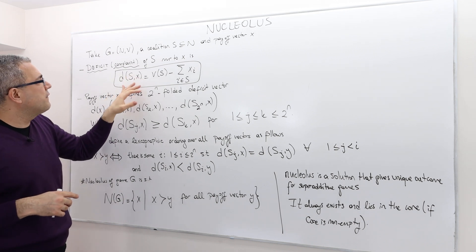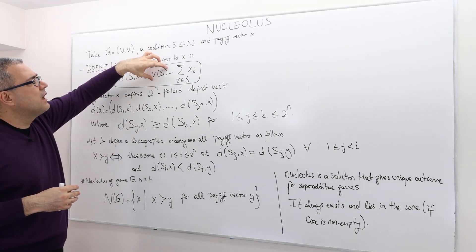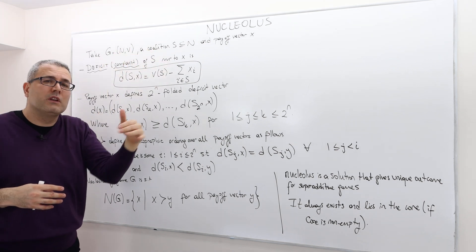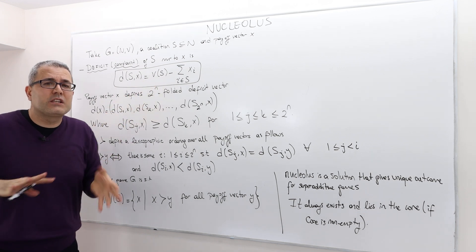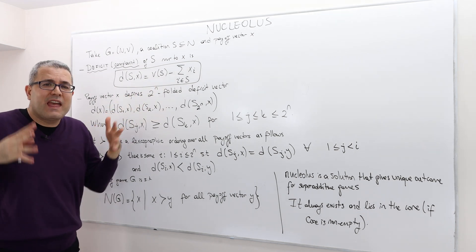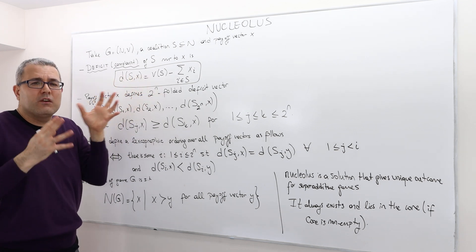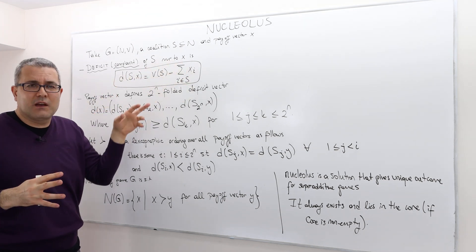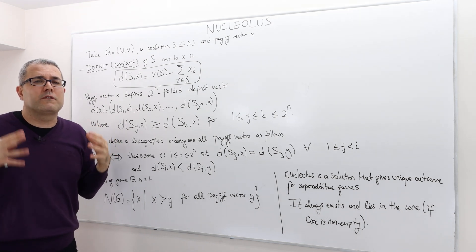However, it's a problem when the deficit is positive. If it is positive, it means this coalition S could actually achieve higher payoff if they exclude everybody else and then form this coalition S by itself.